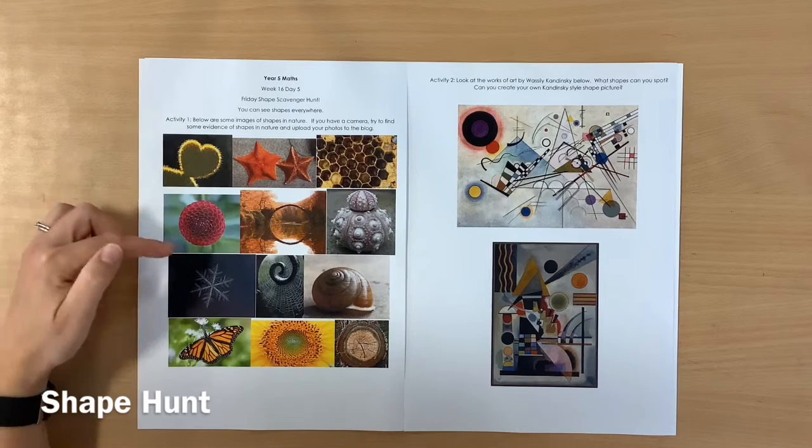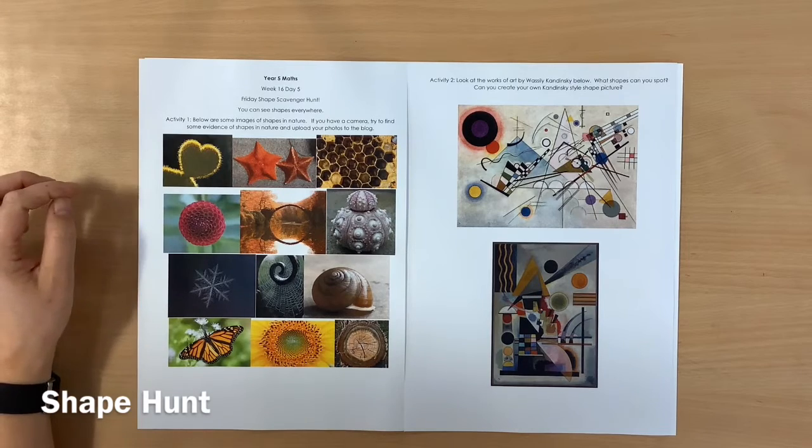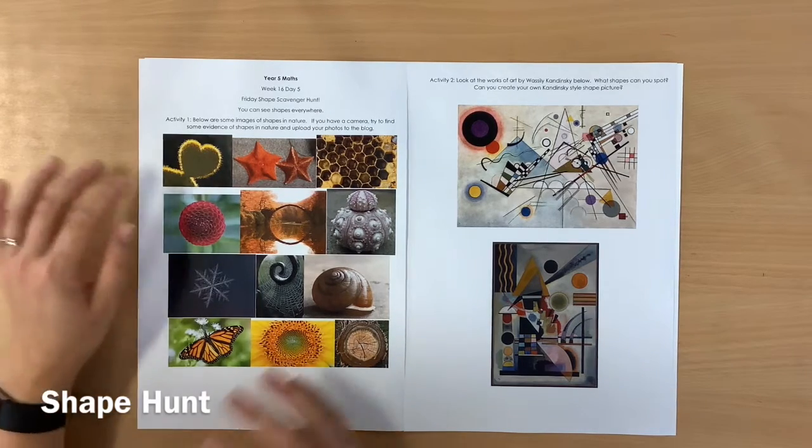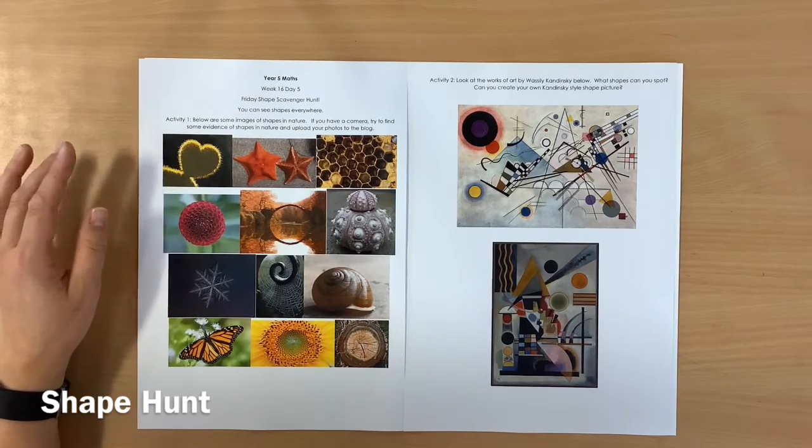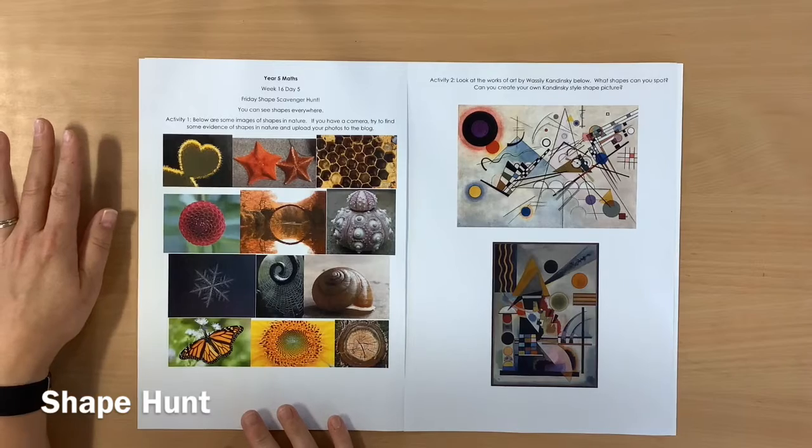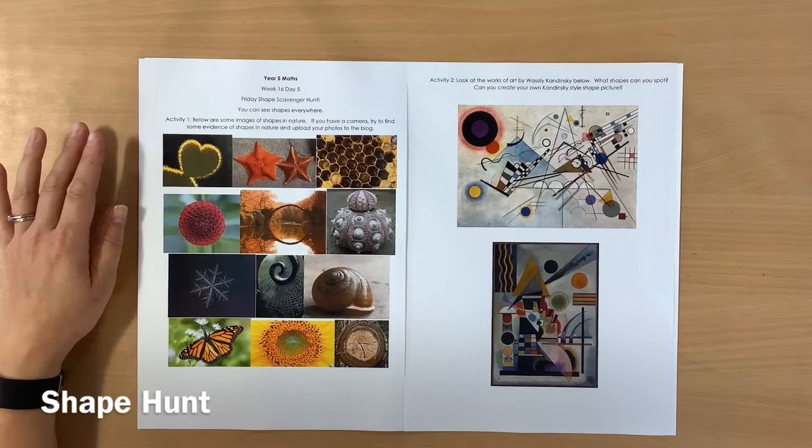So, I've put some examples that I found of shape in nature. There's actually something, when you're a bit older, you might learn about the golden ratio, which is fascinating about shape in art, sorry, shape in nature.